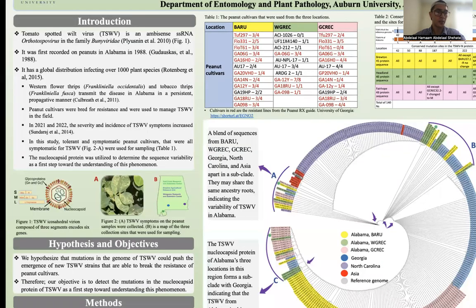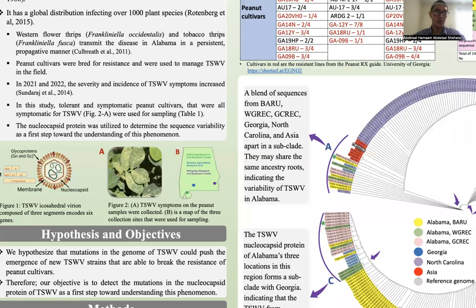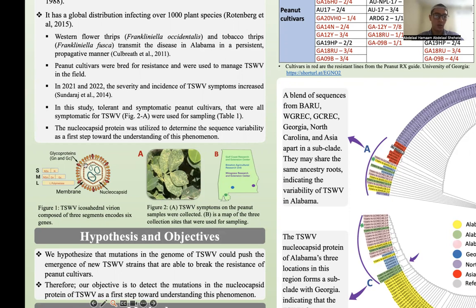Before going further, I'd like to talk about the genome organization of this virus. It is composed of three main segments: the small segment (S), the medium segment (M), and the large segment (L). The small segment has two genes: the first is the non-structural silencing protein, which helps the virus overcome RNA silencing from the plant by suppressing it; and the second gene is the nucleocapsid, which we used in this study. The nucleocapsid gives the virus its icosahedral shape and also grabs the whole RNA of the virus, forming something called the ribonucleocapsid.